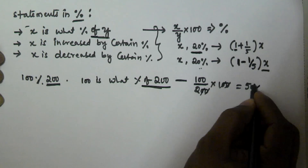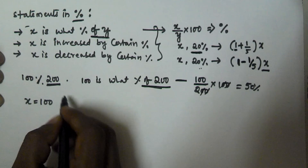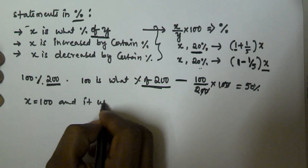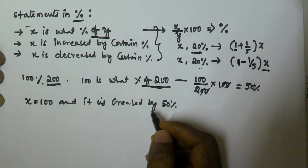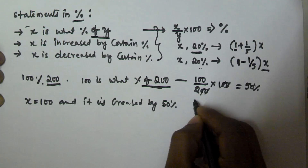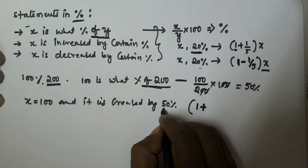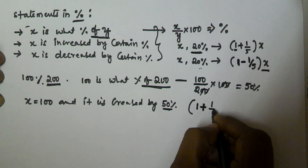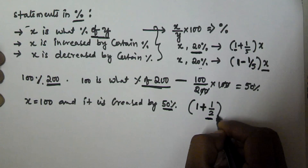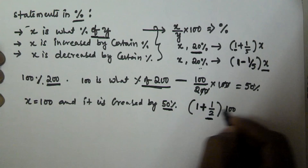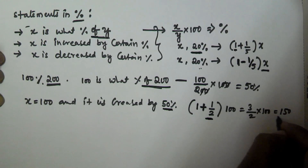Now, the value of x is initially 100 and it is increased by 50%. 100% is already there and we increment by 50%. The fraction corresponding to 50% is 1/2 — as I explained in the previous video. So the new value is (1 + 1/2) × 100 = 3/2 × 100 = 150.